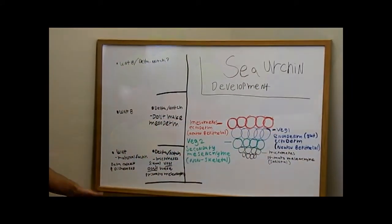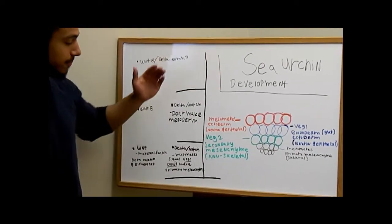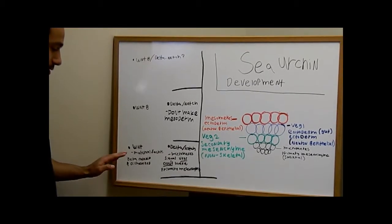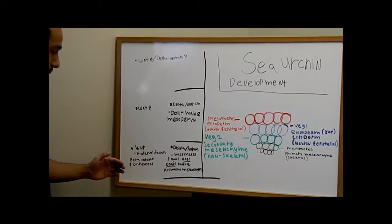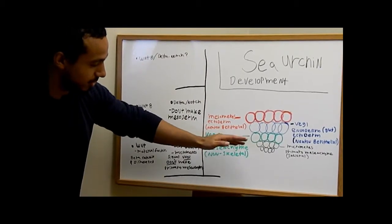So to summarize, here are the different developmental pathways that occur in sea urchin development. So in the micromeres, we have the maternal factors beta-catenin and disheveled, which work in the Wnt pathway between micromeres and veg2.